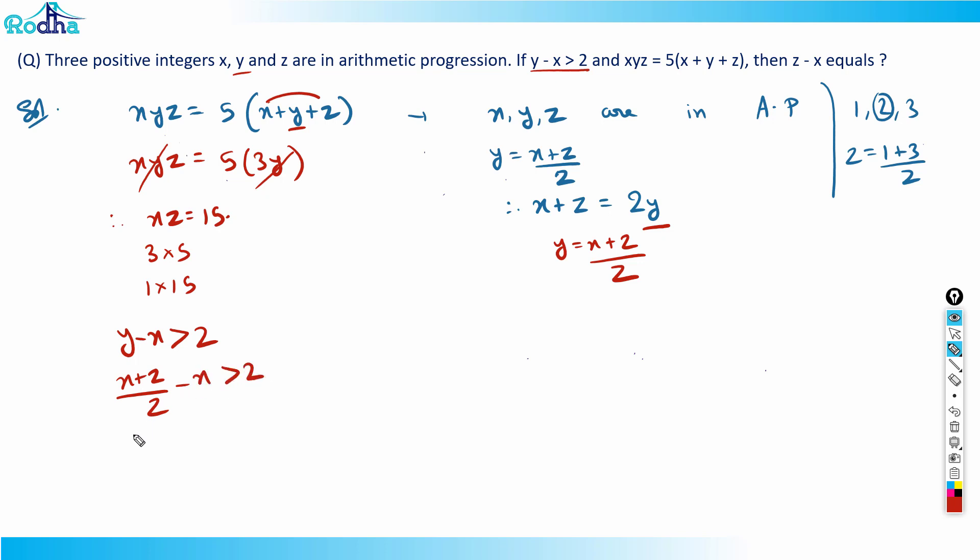That means x plus z minus 2x is greater than 4. It means that z minus x is greater than 4. So one more equation I got: z minus x is greater than 4.